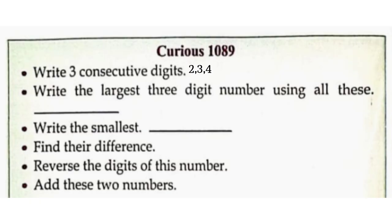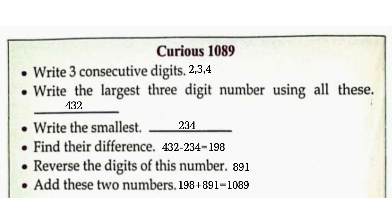Largest 3-digit number: 432. Smallest 3-digit number: 234. Find their difference. 432 minus 234 is equal to 198. Reverse the digits of this number: 891. Add these two numbers. 198 plus 891 is equal to 1089.